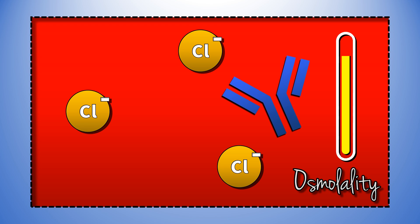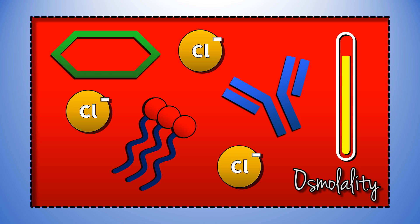So let's round up the usual suspects. These include proteins, as in myeloma; lipids, as in hyperlipidemia; and glucose in hyperglycemic states.